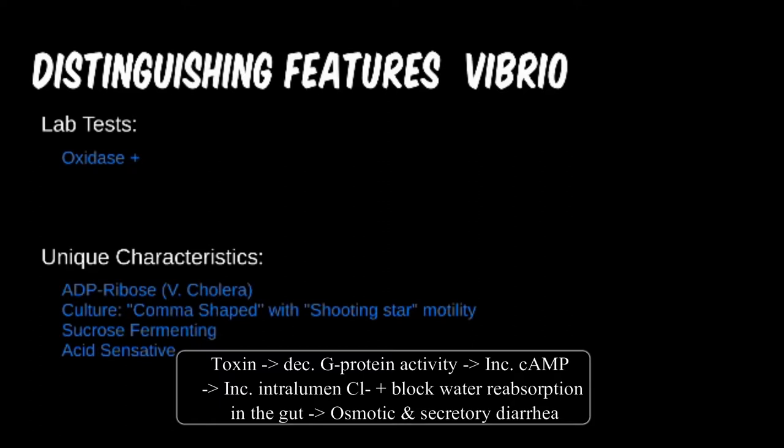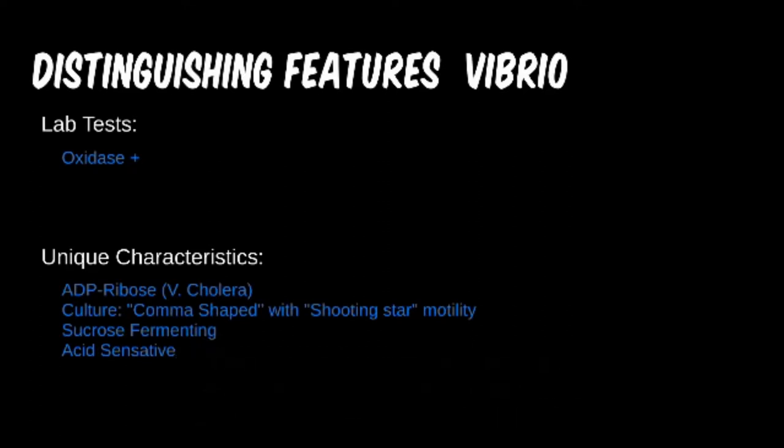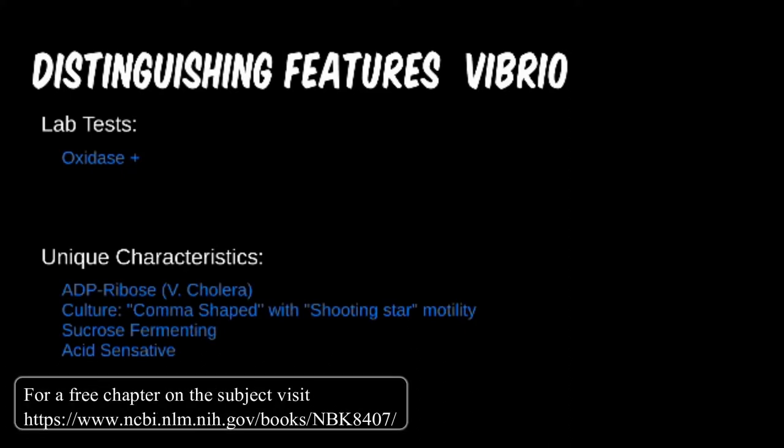Vibrio cholerae can be described as comma shaped with shooting star motility on culture, but these buzzwords are less frequent for testing purposes. Despite being infected via the fecal-oral route, this microbe is not acid resistant as Campylobacter is. Individuals with decreased immune systems or decreased stomach acid levels are thought to be more prone to these infections.